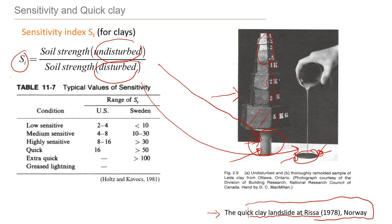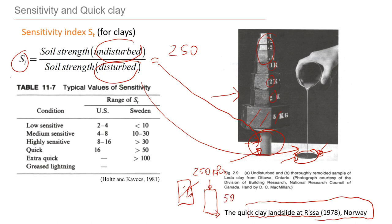Let's look at some numbers just to make sure we understand how it works. Let's say we have a sample of clay collected somewhere in Norway. When the sample is undisturbed, the strength was about 250 kPa. When it was remolded — we just remolded the soil, made another sample, and did an unconfined compression test on that remolded sample — we got that the value of the strength was only 50 kPa. So the ratio between 250 and 50 will be 5. That's the sensitivity index for this clay.